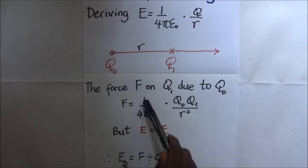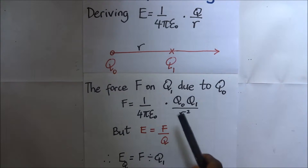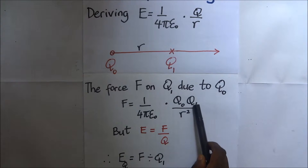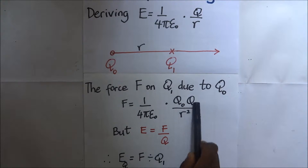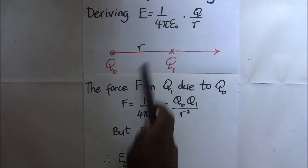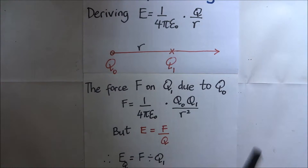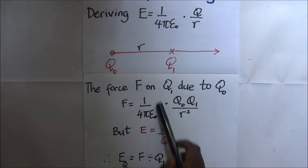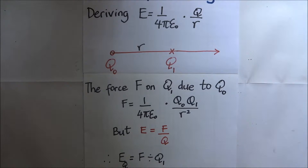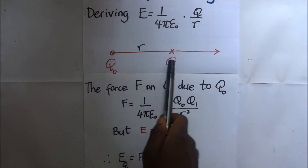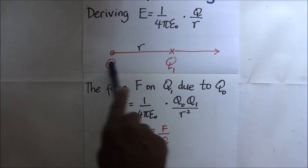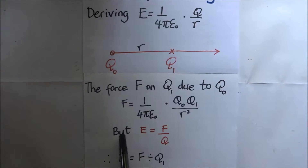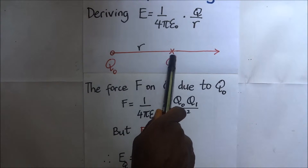The force F on Q1 due to Q naught is equal to one over four pi epsilon naught, times Q naught times Q1 — the product of the charges — divided by r squared, the square of the separation. The constant one over four pi epsilon naught, by experimental observation, is equivalent to nine times ten to the power nine. Knowing this force acting on Q1 due to Q naught, we are interested in finding the intensity at that point.